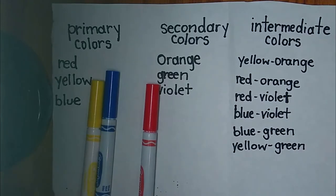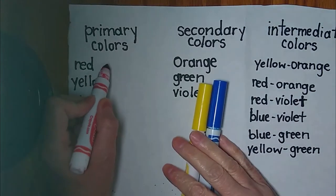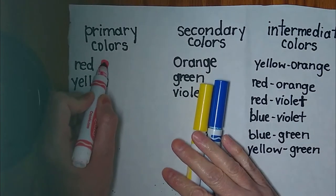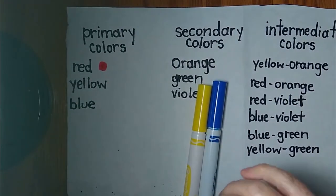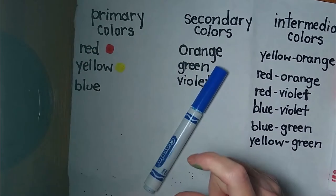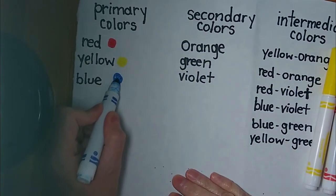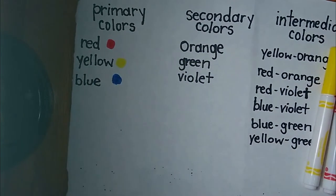Let's start with the primary colors: yellow, blue, and red. I've written down red first so I'll get my red marker and color a red dot here. Then I'll get my yellow and do the same. Then we have blue.